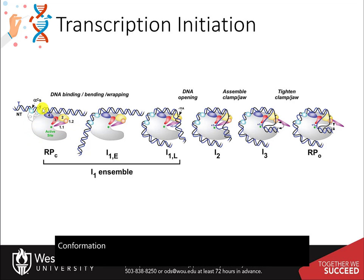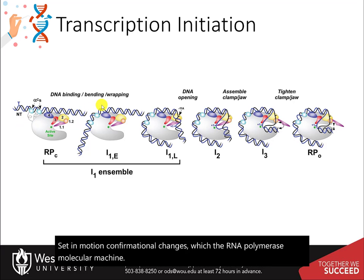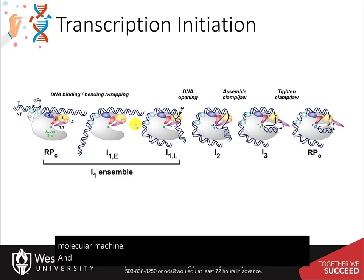Initial specific binding to the promoters by sigma factors sets in motion conformational changes in which the RNA polymerase molecular machine bends and wraps the DNA, with mobile regions of RNA polymerase playing key roles.